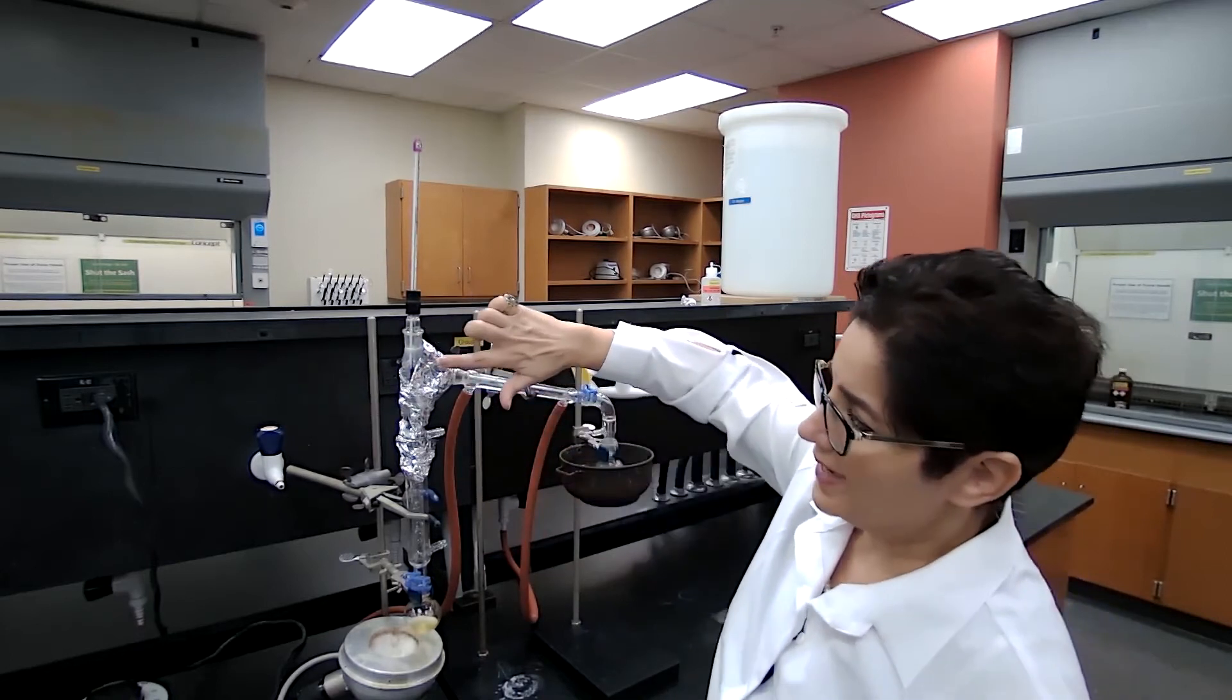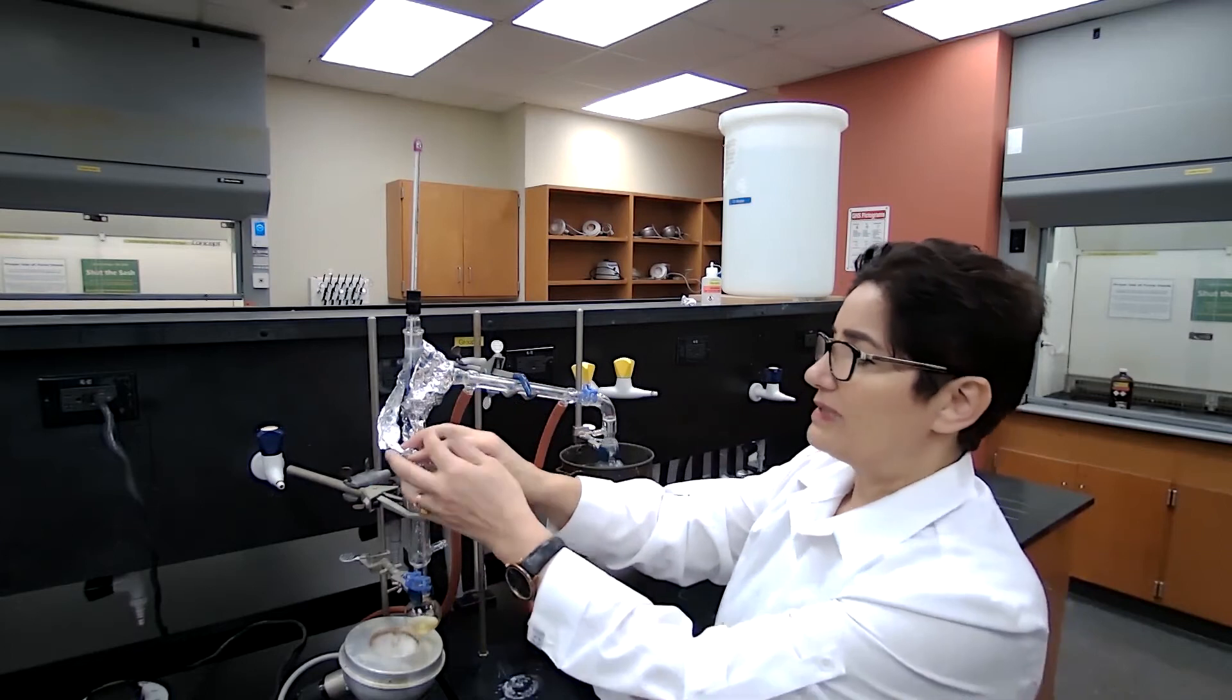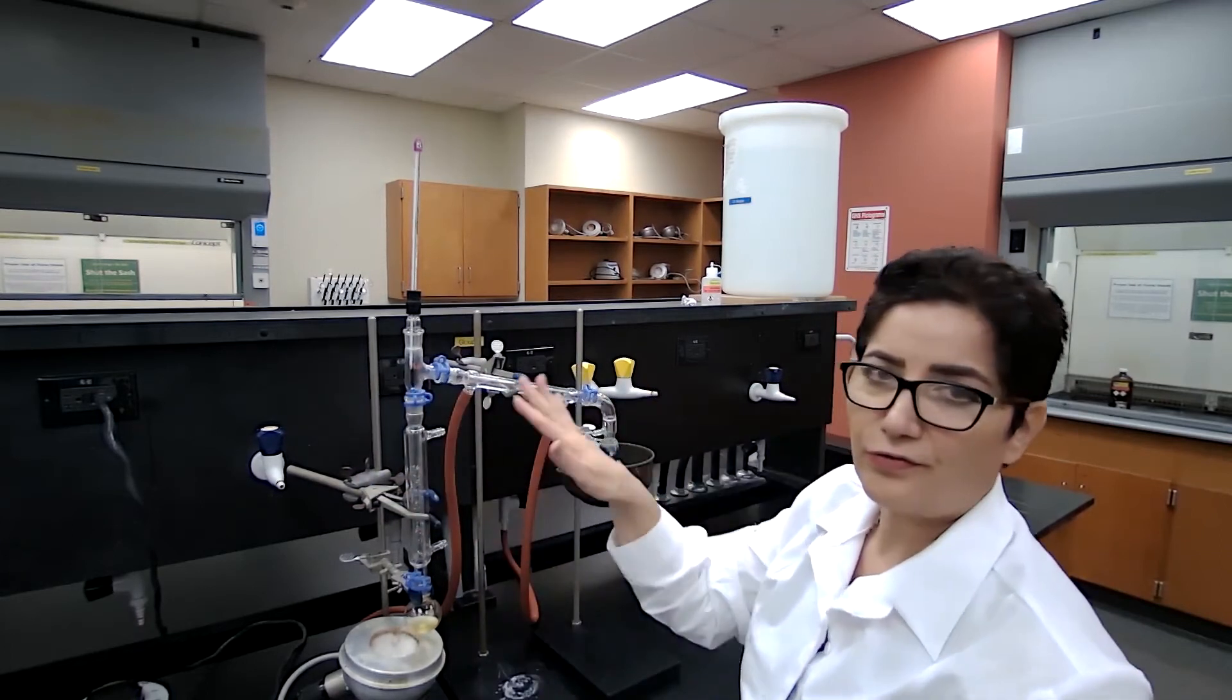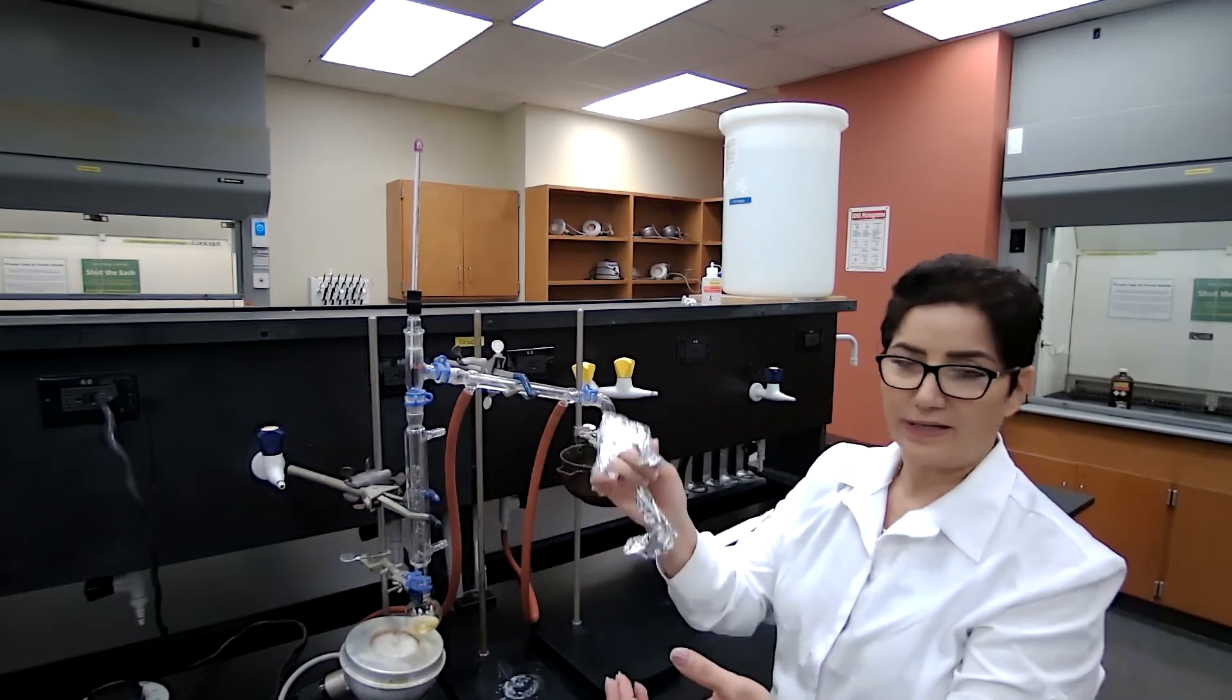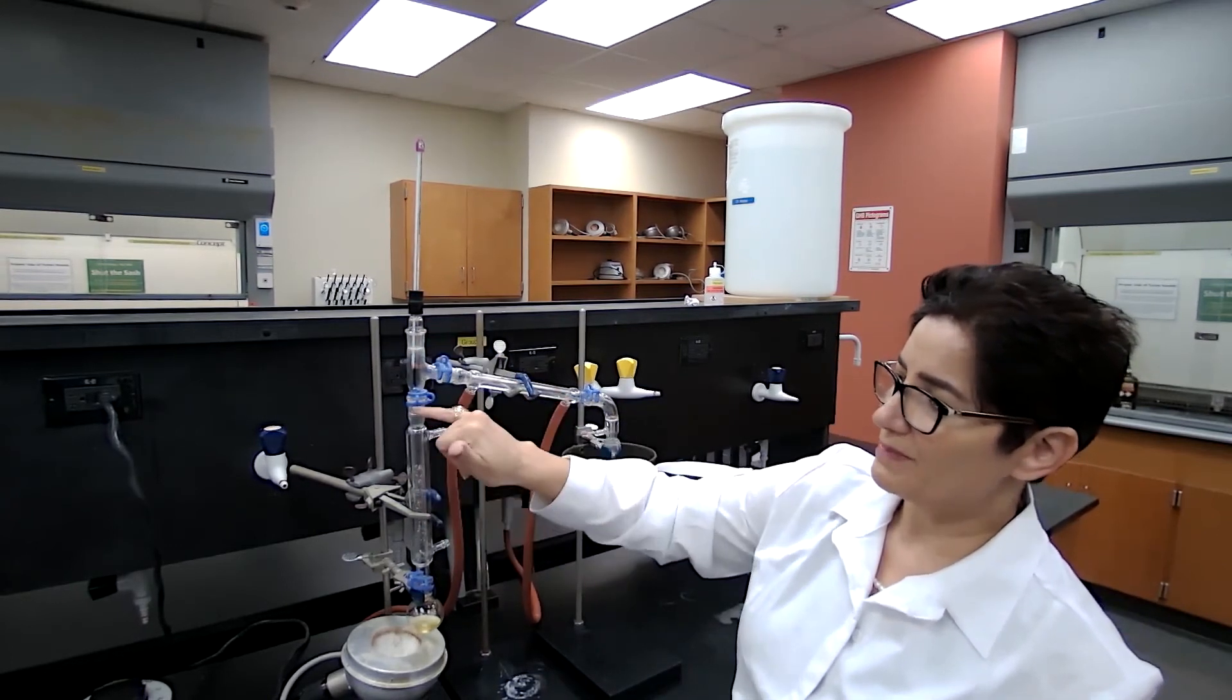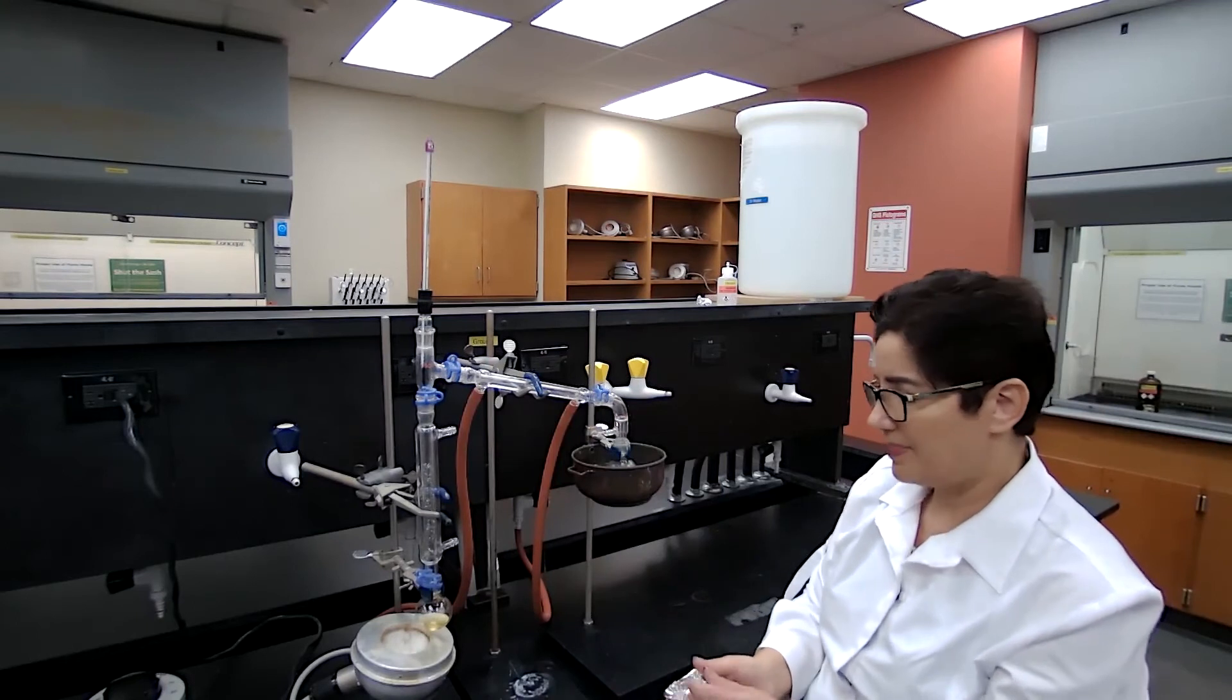I also want to add a point about this aluminum foil wrapping around the distillation head. Whenever you're doing fractional distillation, if it takes too long for your sample to make it to the condenser or receiving flask, you can use aluminum foil to wrap the distillation head so the vapor that makes it all the way up would be directed into the condenser.